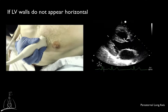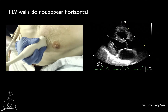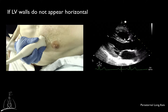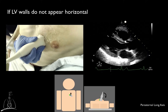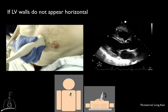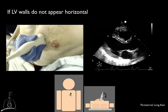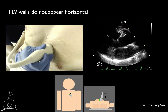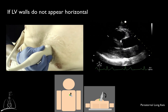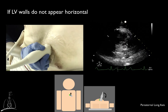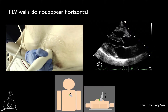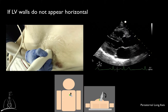If the interventricular septum and the inferolateral walls do not appear horizontal, two manipulations can be attempted: sliding of the transducer superiorly, usually one intercostal space higher, or rocking the footprint toward the sternum.